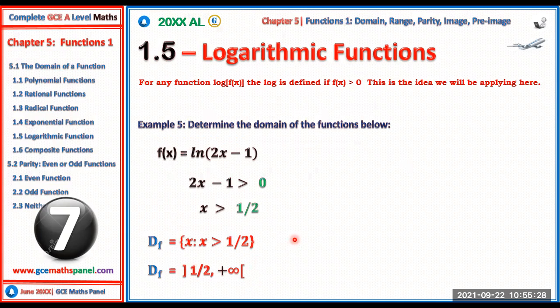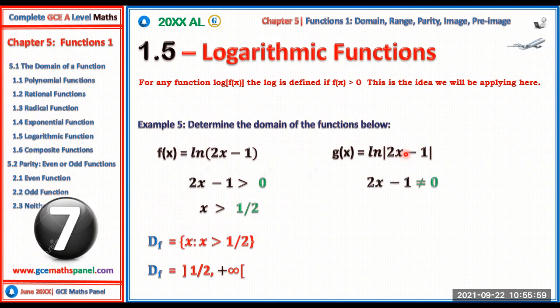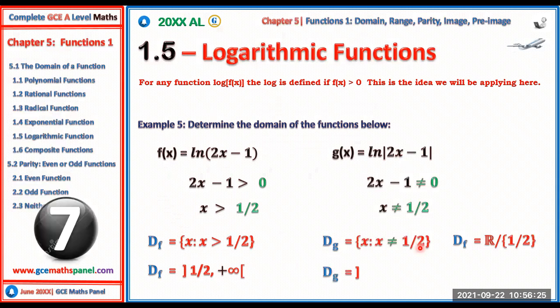For g(x) = ln|2x − 1|, the absolute value makes everything inside positive. The only problem is when the core equals zero, since ln(0) is undefined. So we need 2x − 1 ≠ 0, giving x ≠ 1/2. The domain is all real numbers excluding 1/2, with four boundaries: negative infinity, 1/2 from below, 1/2 from above, and positive infinity.